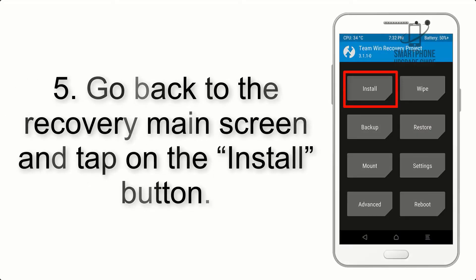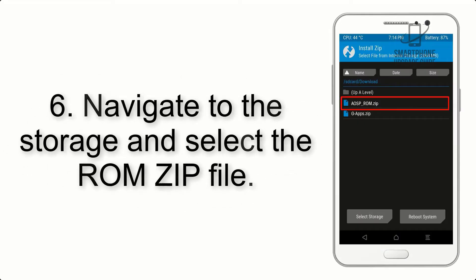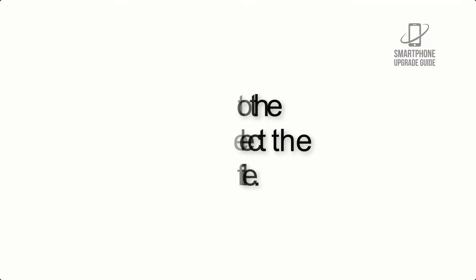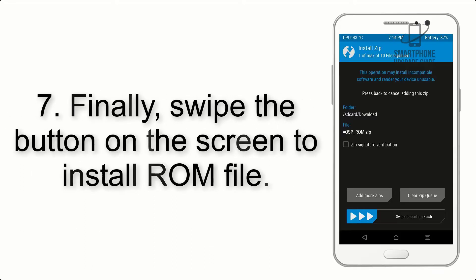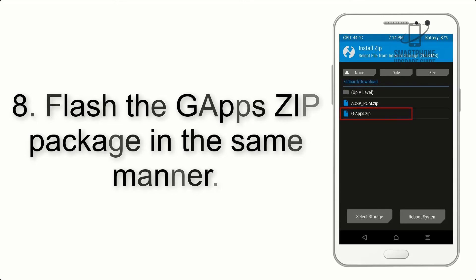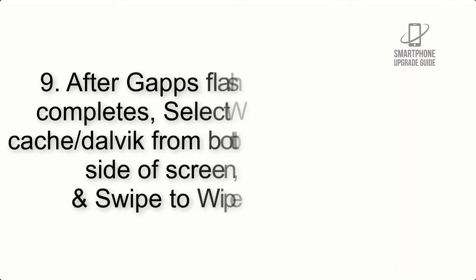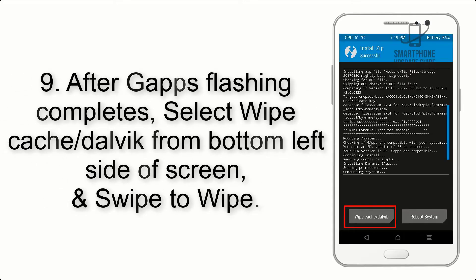Step 5: Go back to the recovery main screen and tap on the Install button. Step 6: Navigate to the storage and select the ROM zip file. Step 7: Swipe the button on the screen to install the ROM file. Step 8: Flash the GApps zip package in the same manner.